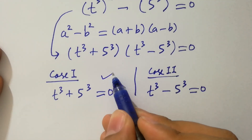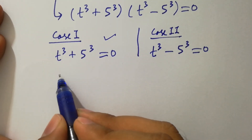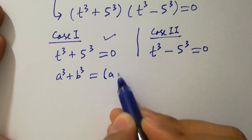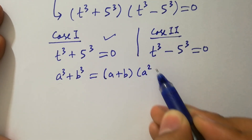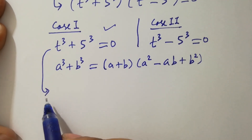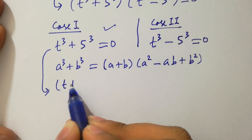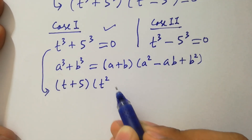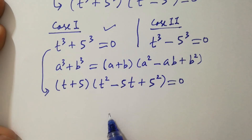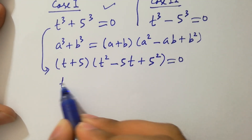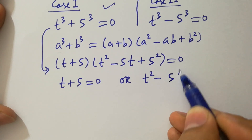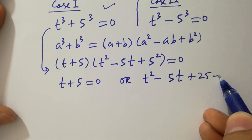First, take Case 1. We know the formula of a cubed plus b cubed, which equals a plus b times a squared minus ab plus b squared. Applying it, we get t plus 5, times t squared minus 5t plus 25, equal to 0. So either t plus 5 equals 0, or t squared minus 5t plus 25 equals 0.